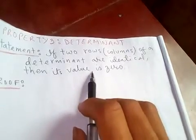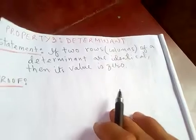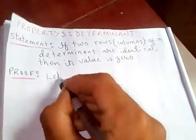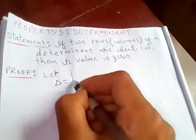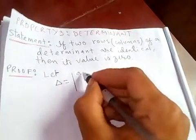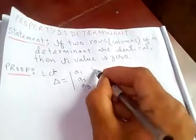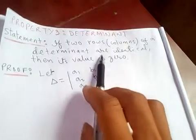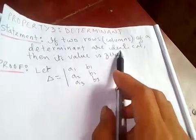its value, that is the determinant value, will be zero. Let delta equal, let's say, a1 b1 a2 b2 a3 b3. Since our statement says that if two rows or columns of a determinant are identical,